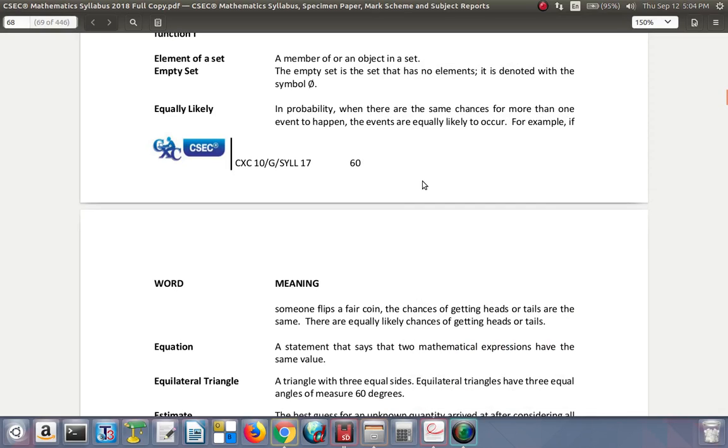We continue to look at these words and their meaning in the CSEC syllabus. Element of a set: a member of or an object in a set. Empty set: the empty set is a set that has no elements. It is denoted with the symbol, and you see that symbol there.